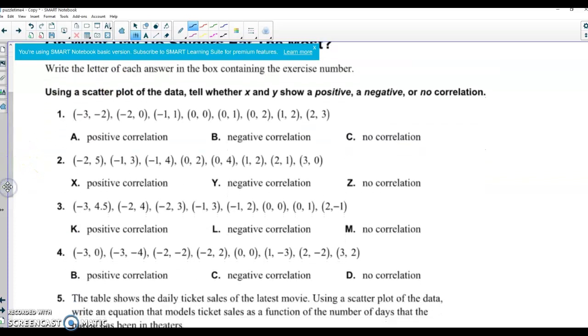If you look at questions 1 through 4, it's asking if it's positive, so the numbers are going up. Negative, so the numbers are going down, or no correlation, so they're spread all over the place.